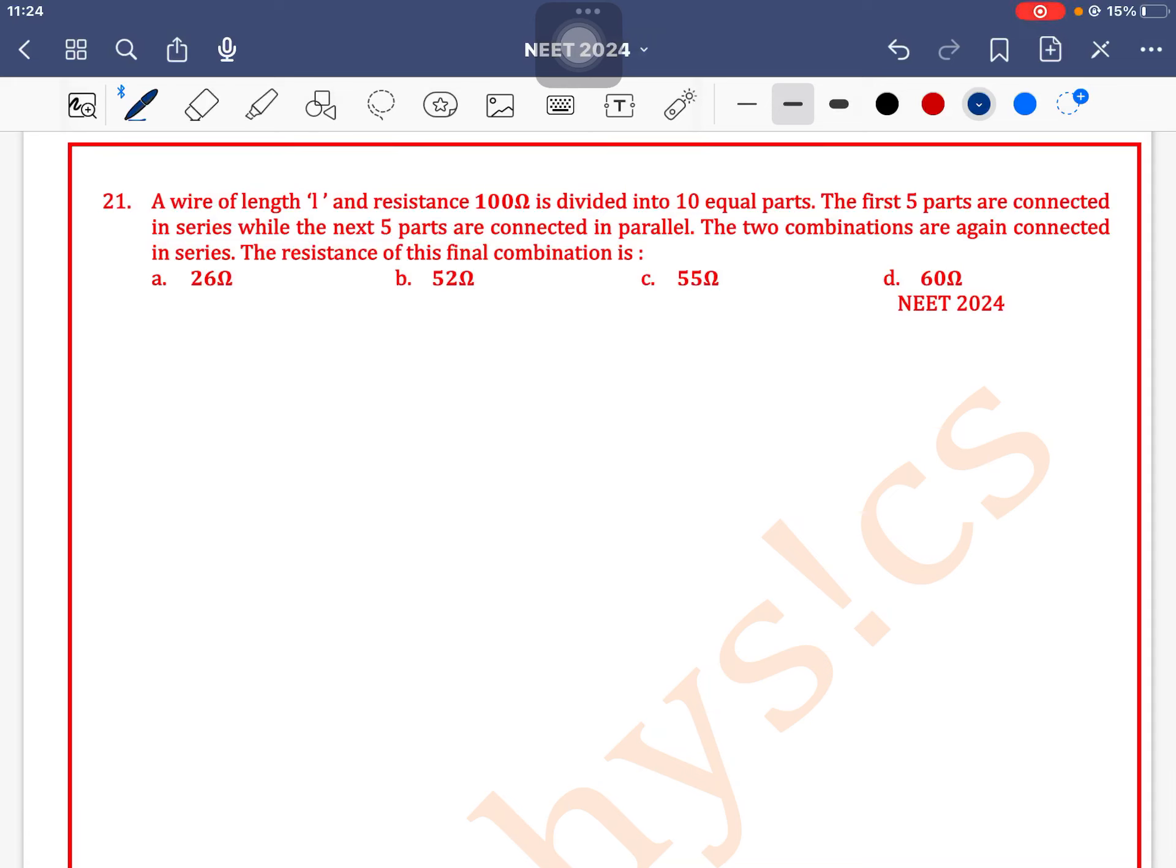A wire of length L and resistance 100 ohm is divided into 10 equal parts. So the resistance of each part will be 10 ohm. The first five parts are connected in series while the next five parts are connected in parallel. This parallel combination is connected in series with the first five parts.